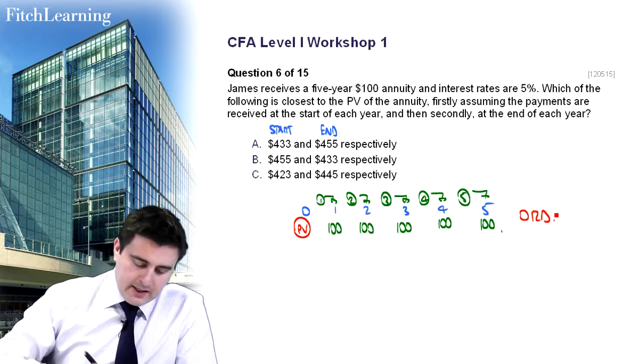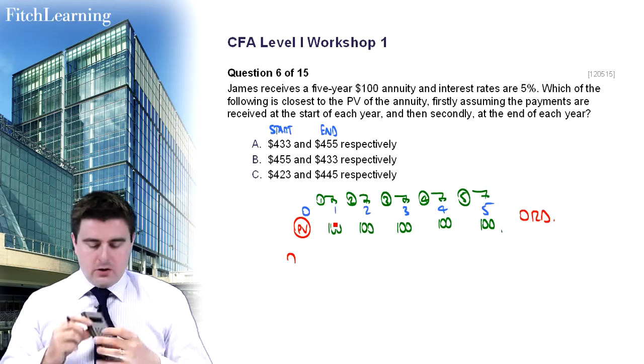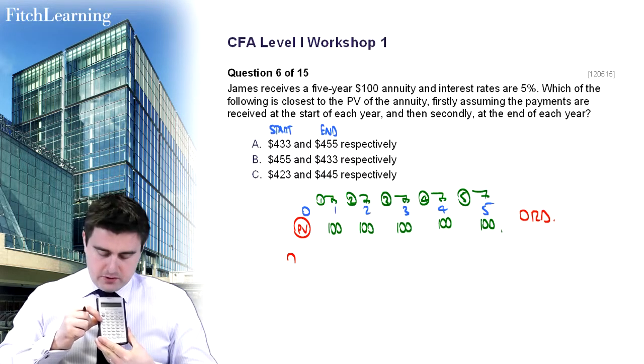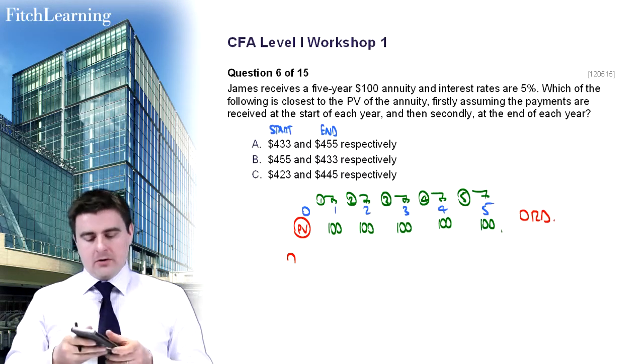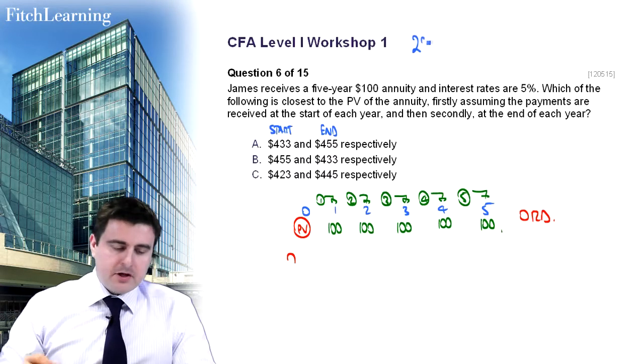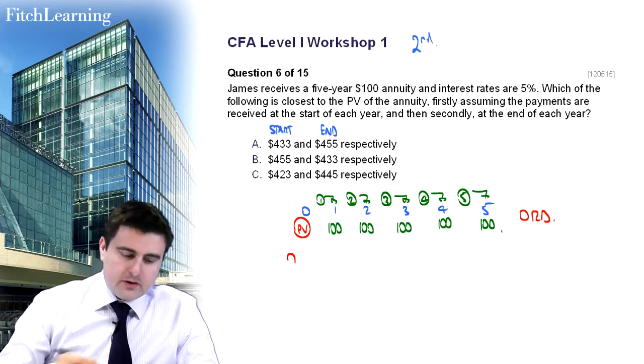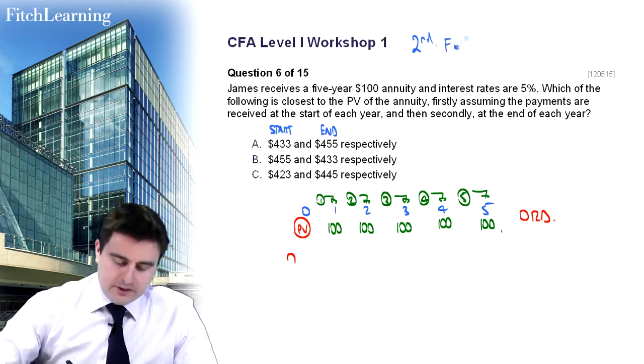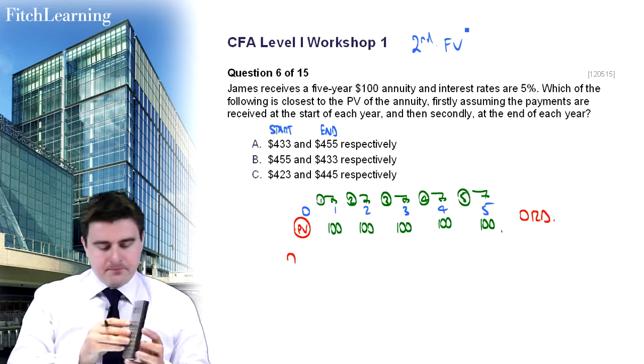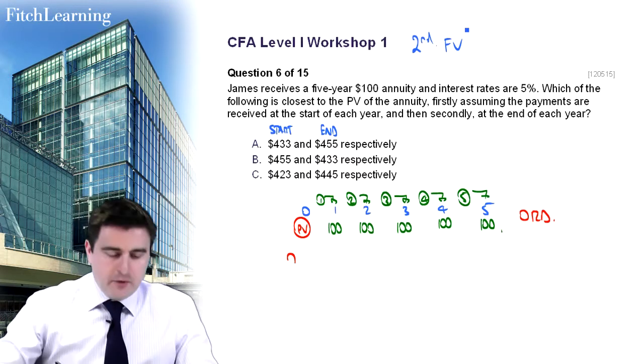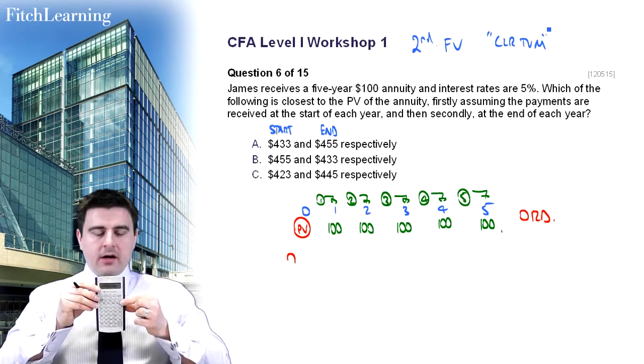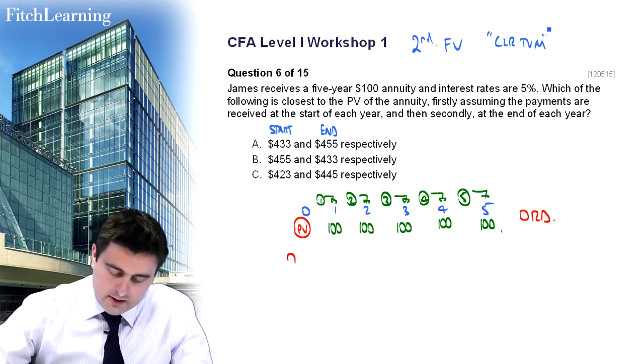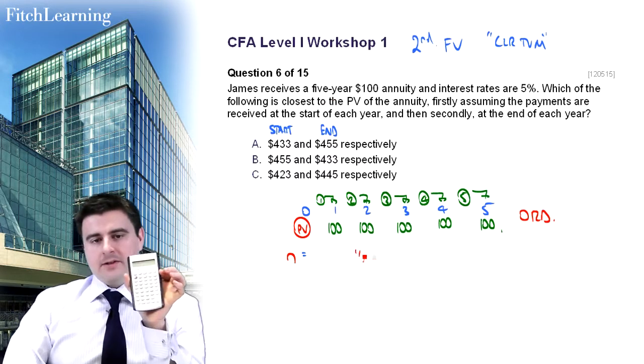So all we need to do, remember this is referred to as an ordinary annuity. All we need to do is use our calculator, set it up. Remember that you have on your calculator on the third row, you have all of your time value of money buttons, and we can insert values to then solve for the unknown. Now remember that before we use it, what we should do is to make sure that we clear the calculator, make sure that those buttons are set to zero if you like. So remember, pressing the second button, and we press the FV, that's the future value button, third row on the right-hand side, that would clear the time value of money.